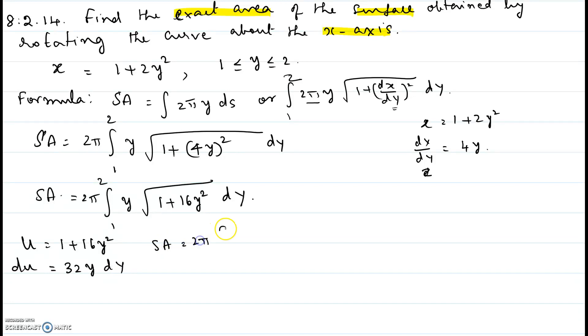would become 2π integral—first let's plug in the one inside the radical which is square root of u—then we have y dy, which can be isolated from here. So divide both sides by 32, so y dy in the integral can be written as du over 32.